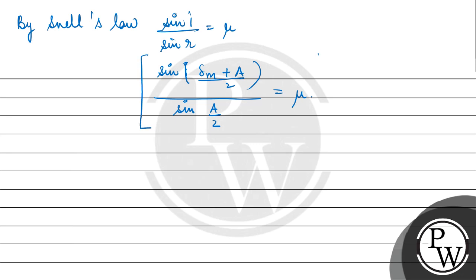This is the relation between refractive index, minimum deviation, and angle of prism. I hope you understood it well. Best of luck.